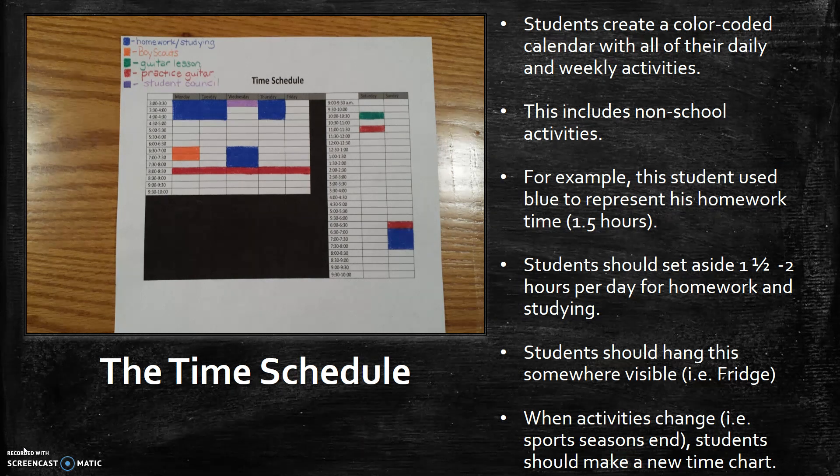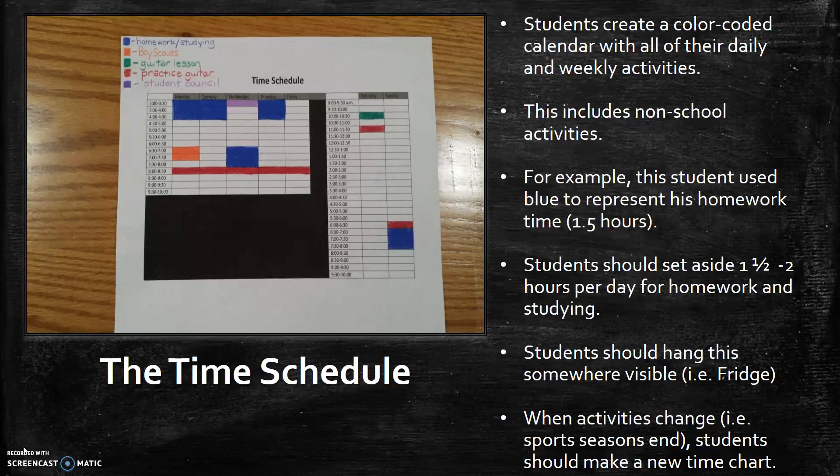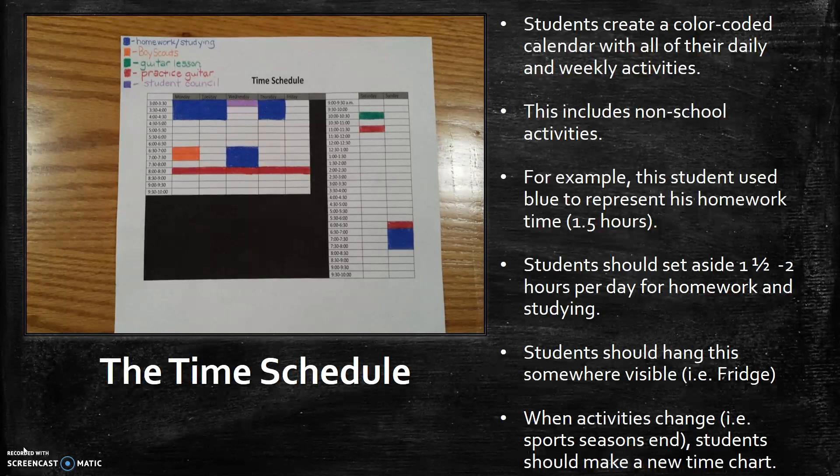So I always tell students you can still have a life and enjoy your video games and hanging out with friends and doing this that and the other but you also can get things done. Now you might say wait a minute what if my son or daughter comes home and they have 3 to 4:30 set aside and 30 minutes into it they're completely done with their homework and it's done well then what?